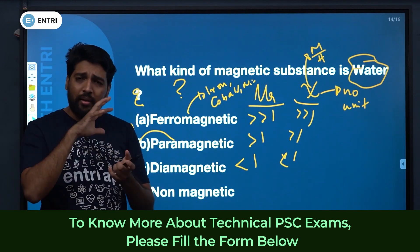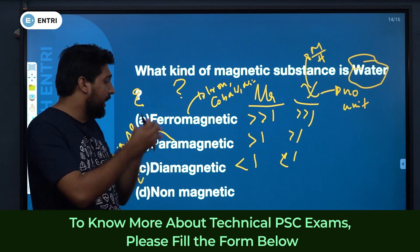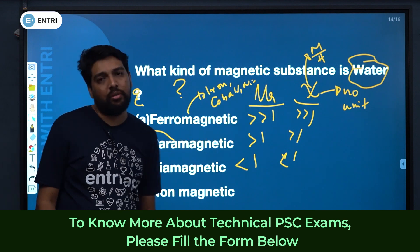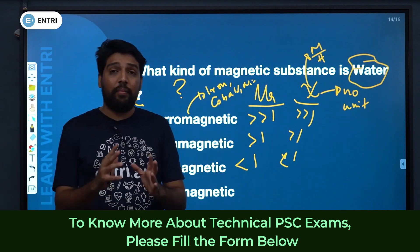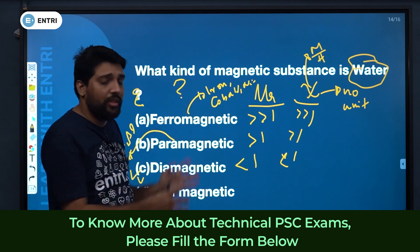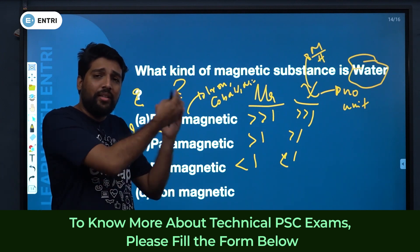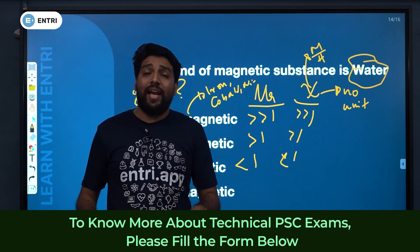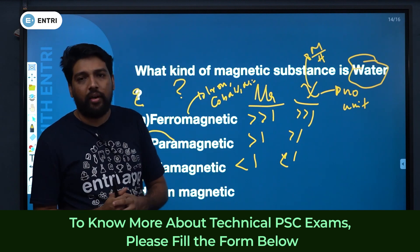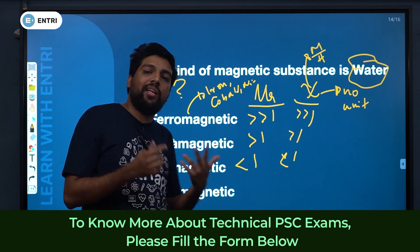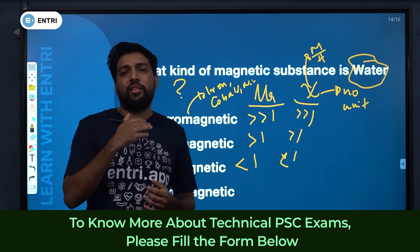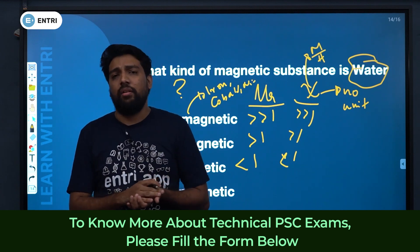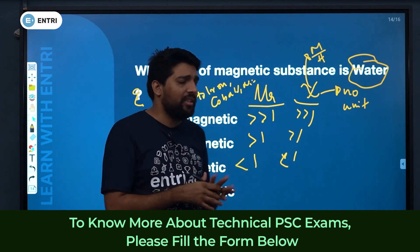Ferromagnetic behavior: μᵣ much greater than one, strong attraction property. Paramagnetic: slightly attracted. Diamagnetic: repulsion property — the material is repelled by the magnetizing force. These are the magnetic behaviors of different substances.